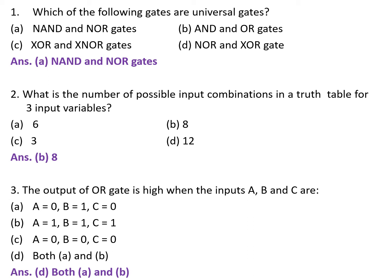Next question: what is the number of possible input combinations in a truth table for 3 input variables? A. 6. B. 8. C. 3. D. 12. The correct answer is B — 8.